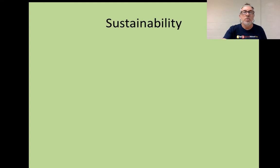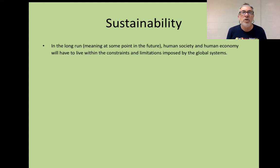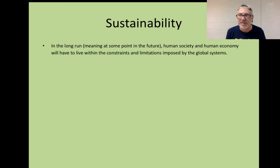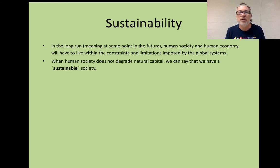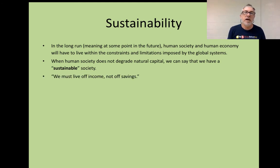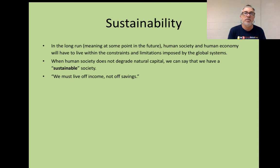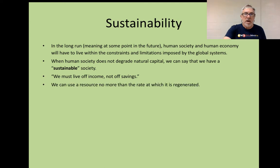I would add ecosystems and natural commodities to the renewable box. Sustainability, then — the first thing we have to think about is that in the long run, human society and human economy will have to live within the constraints and limitations imposed by global systems. When human society does not degrade natural capital, we can say that we have a sustainable society. We must live off income, not off savings — that embodies the idea of sustainability. The income being the annual productivity of a forest, the savings being the entire forest. We can use a resource at no more than the rate at which it is regenerated.